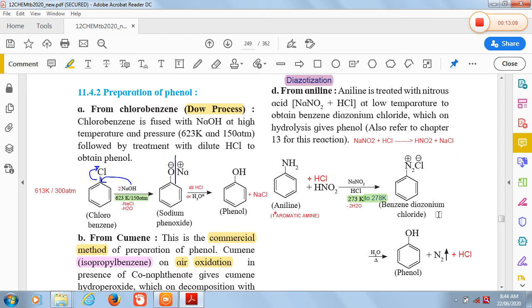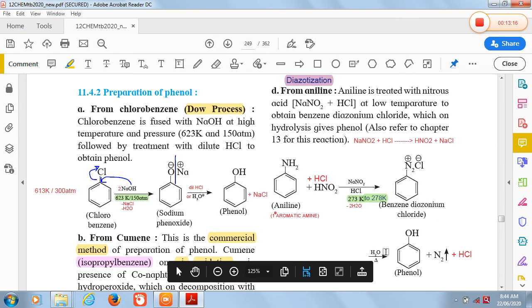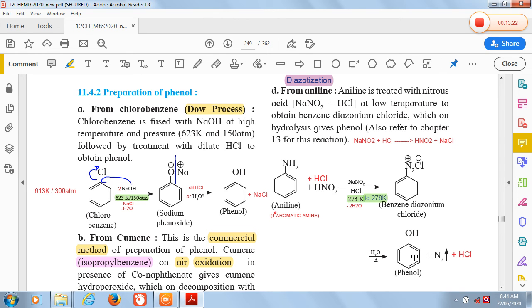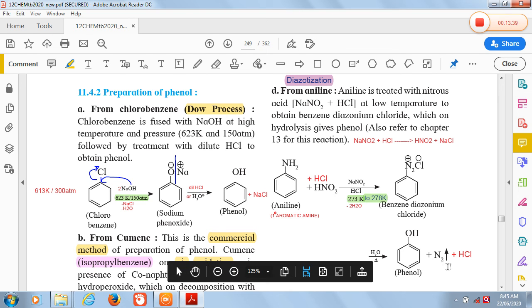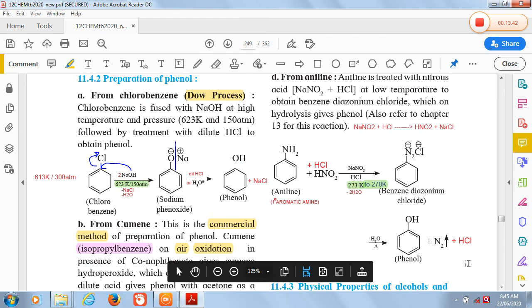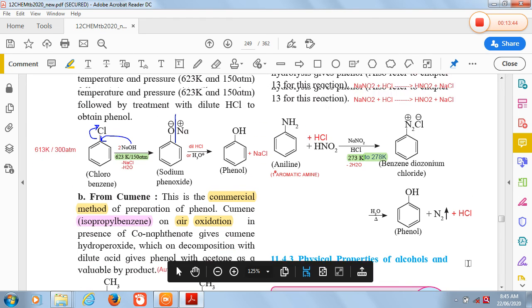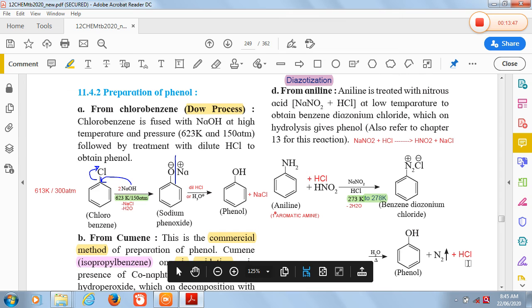Benzene diazonium chloride has much more importance in organic synthesis. If it reacts with water or heating the mixture, we get phenol as a product. There are different uses of benzene diazonium chloride that you will observe while learning topic number 13. Here, one of the uses is preparation of phenol. The byproduct is N2 gas evolved and HCl is another byproduct.